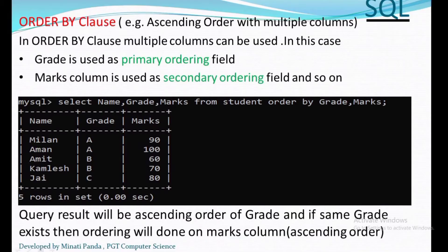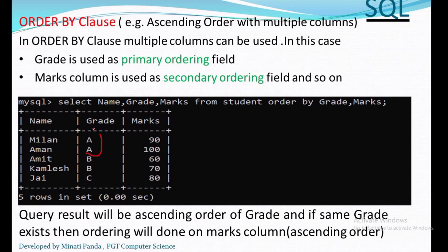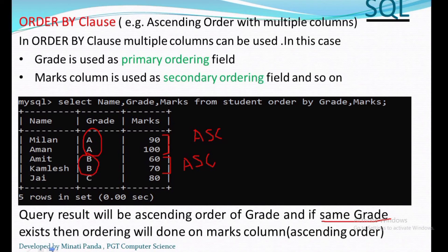As discussed, we can have more than one column in the ORDER BY clause. The first column will be the primary ordering field and the second column will be the secondary ordering field. Here, grade is the primary ordering field and marks is the secondary ordering field. First, all data will be arranged in increasing order of grade. Then, if the same grade exists, ordering will be done on the marks column, also in ascending order, since no order type has been specified.